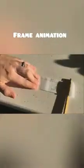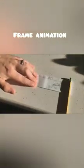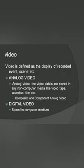Next is video. Video is defined as the display of recorded events or scenes — it is a moving picture in real time. We have analog video and digital video. In analog video, data is stored in non-computer media like videotape, laser disc, or film.